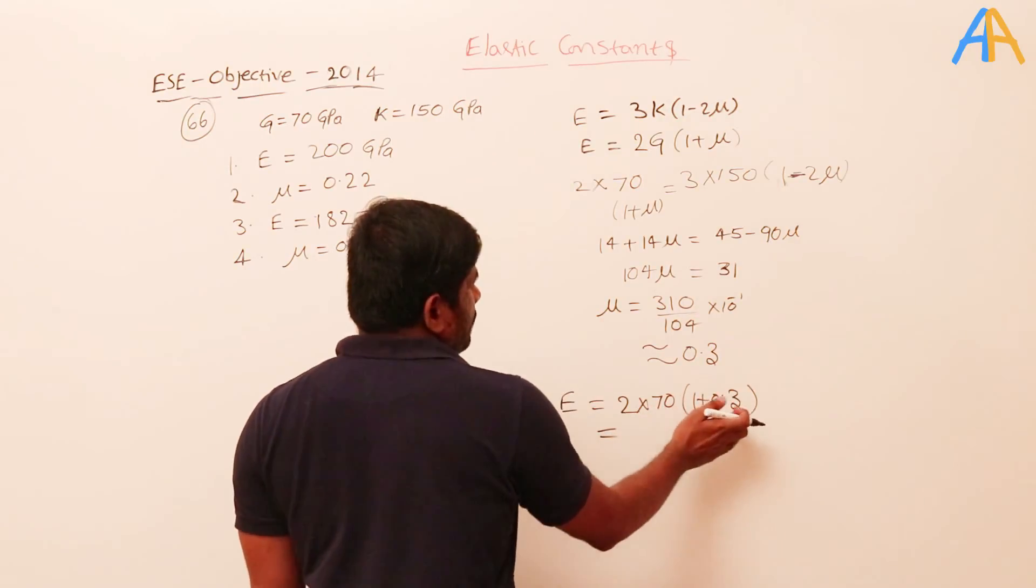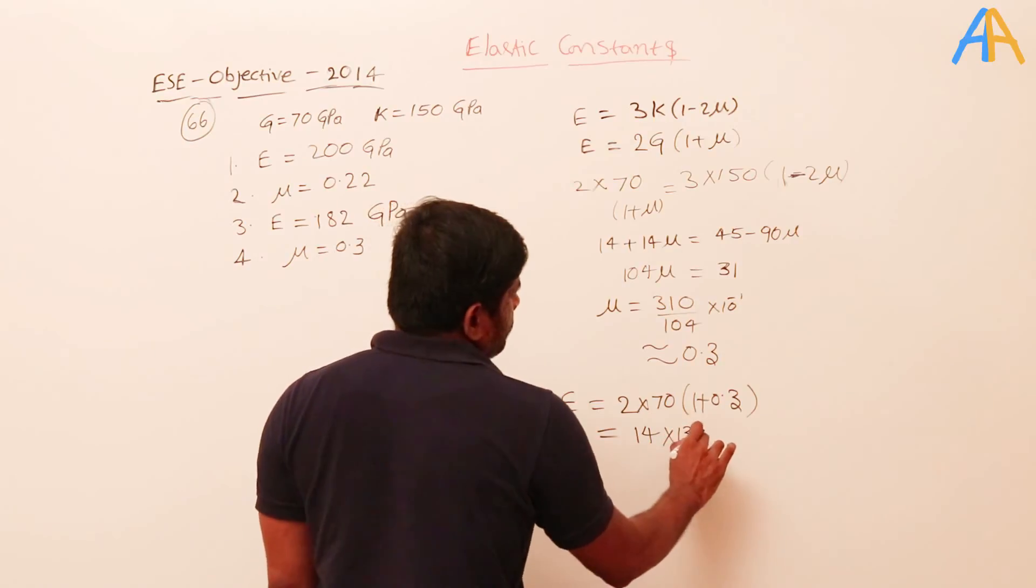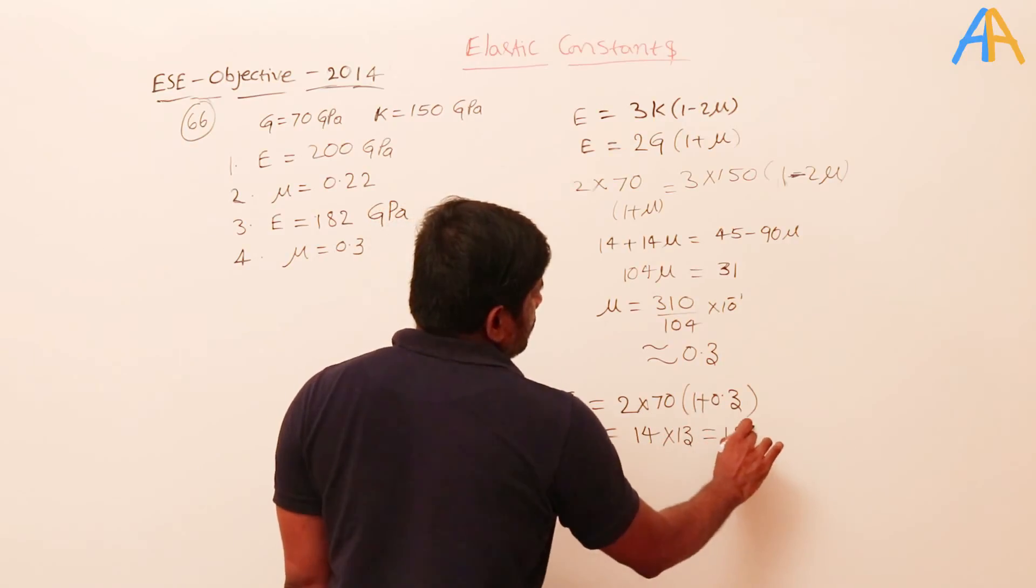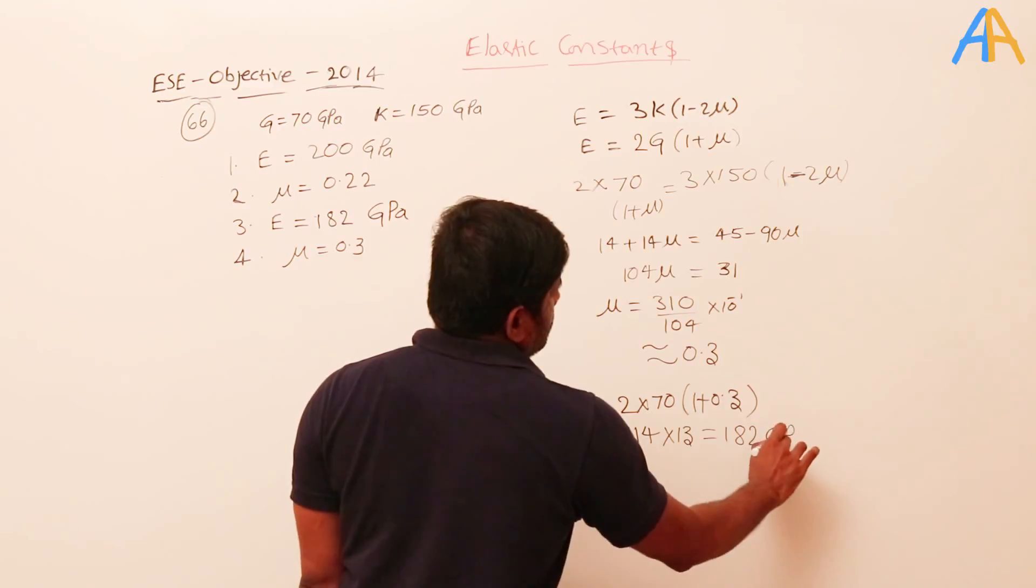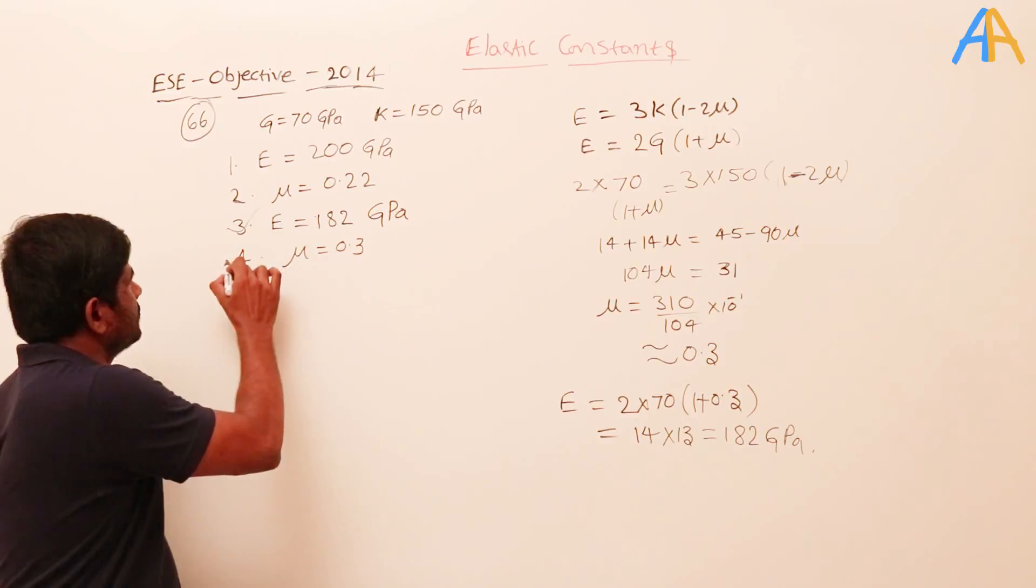14 into 1.23 - how much will it become? 182 GPa.